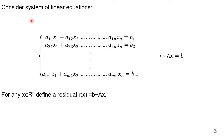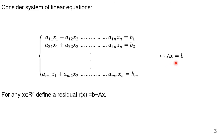Let us consider a system of linear equations: a11·x1 + a12·x2 + … + a1n·xn = b1, a21·x1 + … + a2n·xn = b2, up to am1·x1 + … + amn·xn = bm. The generalized equation can be written as A·x = b in matrix form.